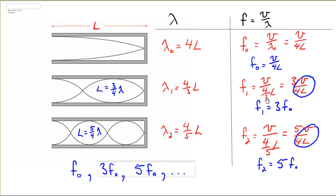So notice the pattern. I get f0, 3f0, and 5f0. I'm only getting every other frequency. So in this case, the allowable frequencies for a pipe that is open only on one end are f0, 3f0, 5f0, 7f0, etc.